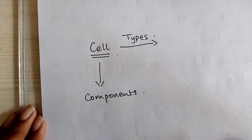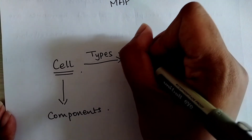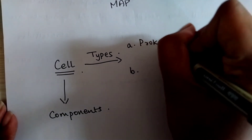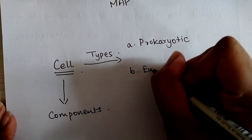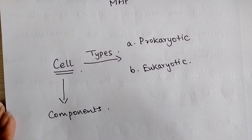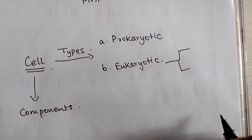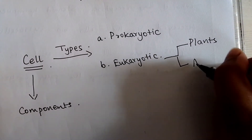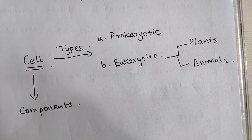Now we'll look at types first. Broadly classifying cells, we have two different types. The first is the more basic prokaryotic cell, and the second is the eukaryotic cell. Within eukaryotic, we know there are two types — plant cells and animal cells. That's a very broad classification.